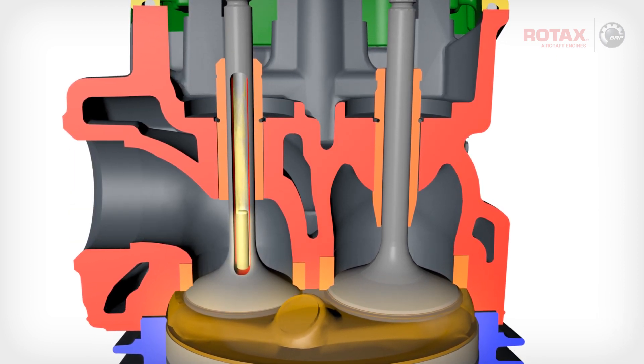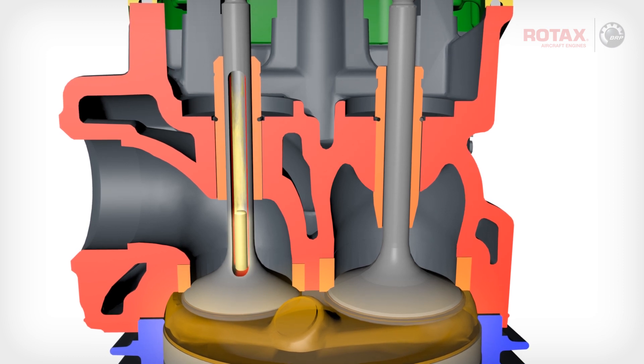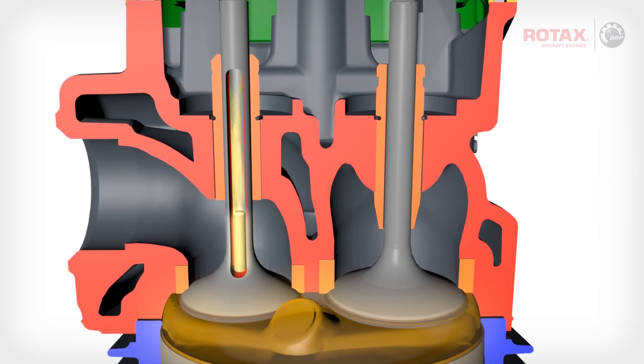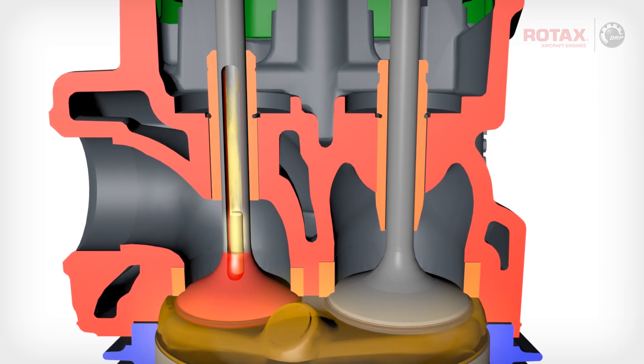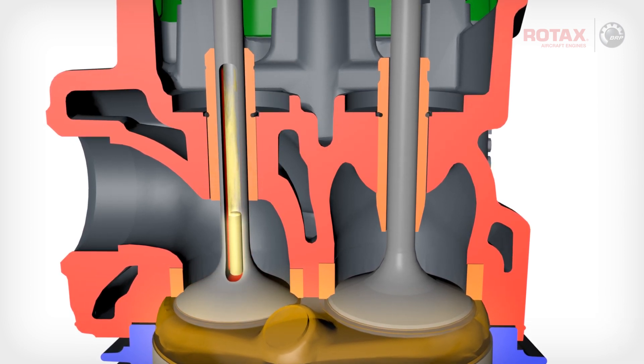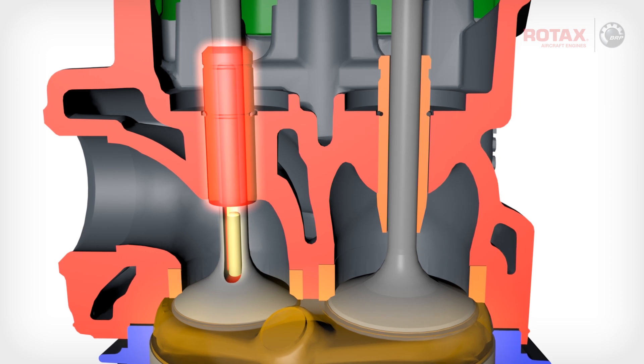The vapor within the hollow valve stem rises up and transfers heat away from the valve flute and up the valve stem into the large contact area of the valve guide.